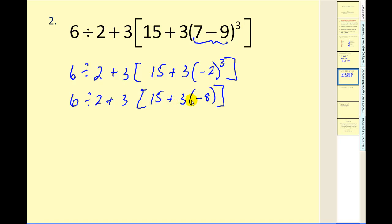Now we have addition and multiplication. Multiplication takes priority over addition. So the next step, still inside the parentheses, three times negative eight is negative twenty-four. Still working within the parentheses, we have to simplify fifteen plus negative twenty-four. Fifteen plus negative twenty-four gives us negative nine.